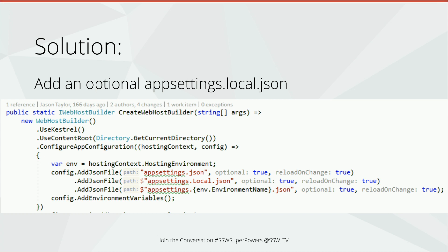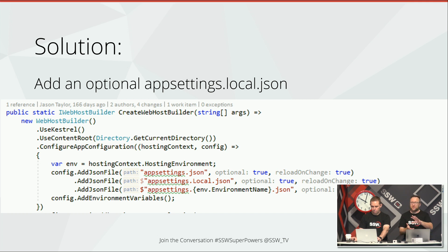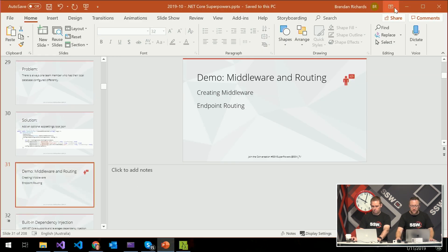Another important thing is that environment variables can also override settings — this is really important for deploying your application. By giving a long name with delimiters you can drill down right into your configuration and override anything at any depth. If you put a colon in there — for example, ConnectionStrings:DefaultConnectionString — that will drill down and set just that connection string. This is particularly important for Docker containers, where a primary way of tweaking configuration is to send a whole bunch of environment variables. Very easy to do in .NET Core, very hard in classic .NET.